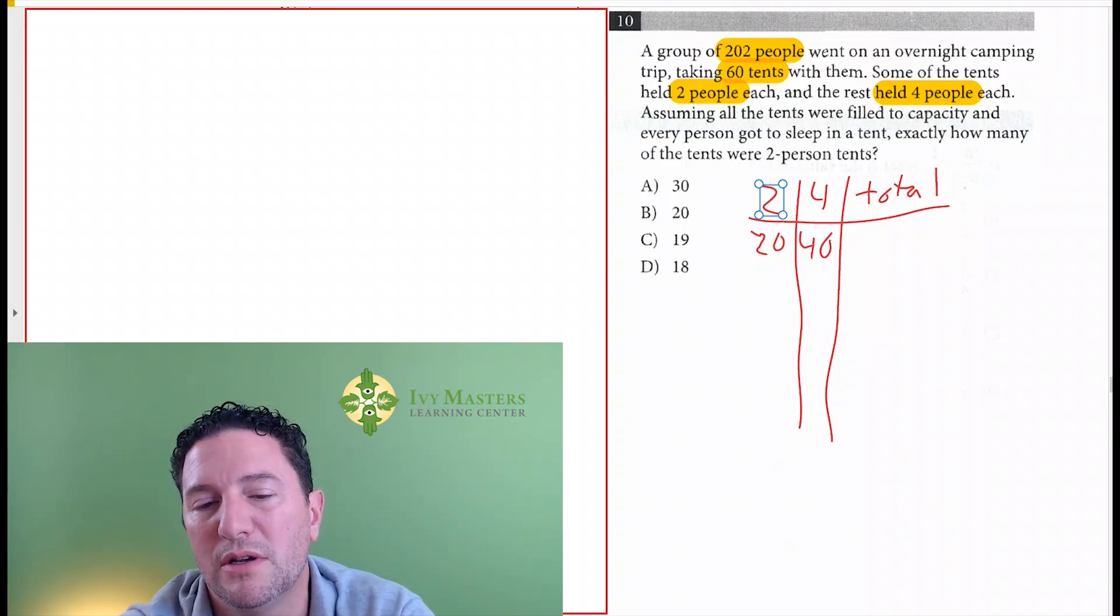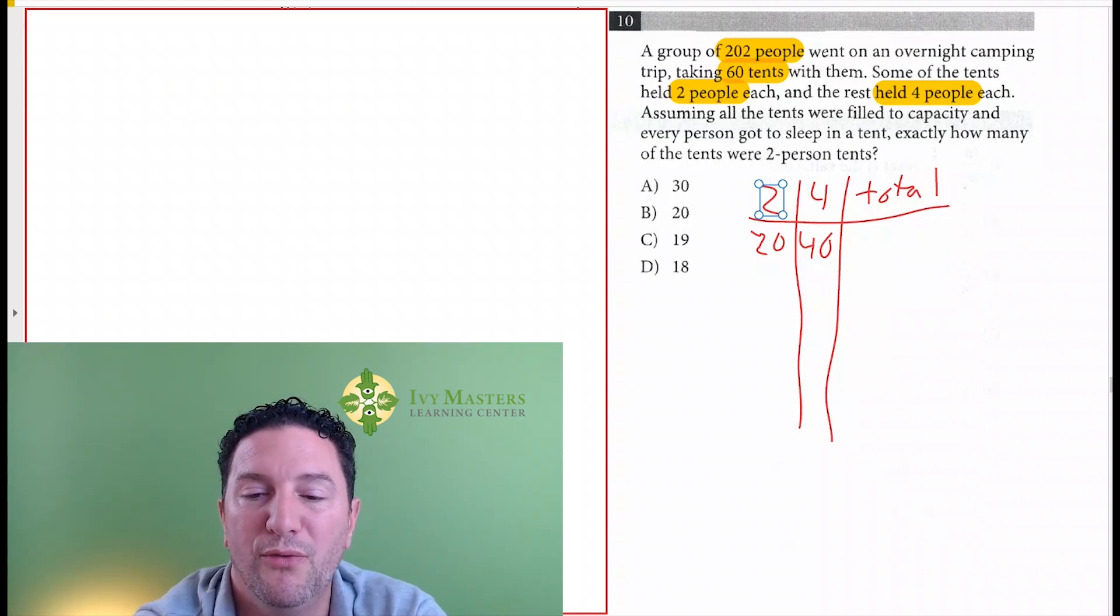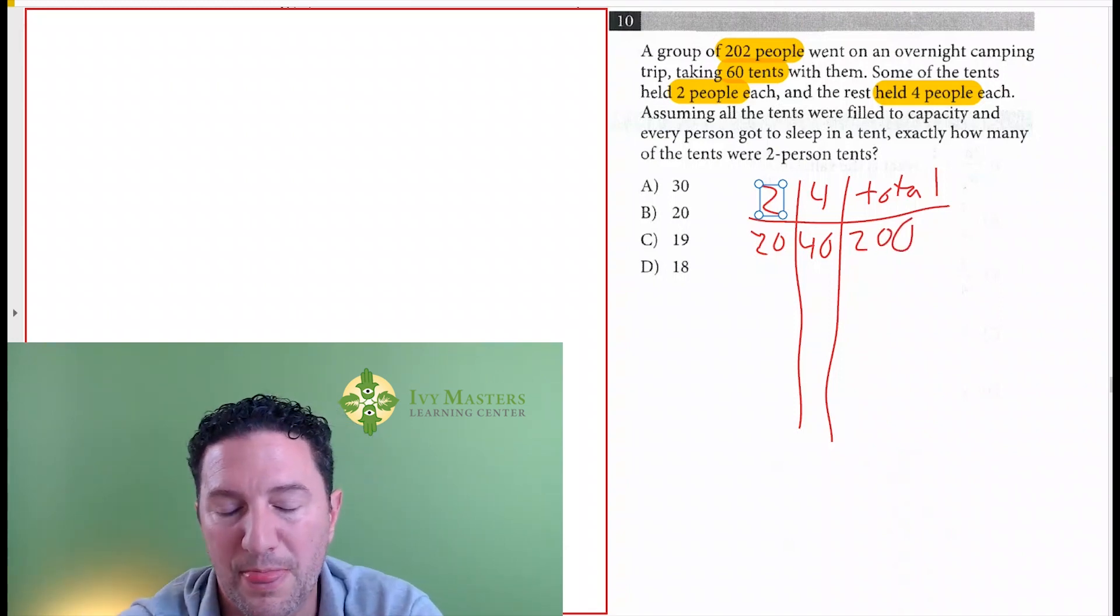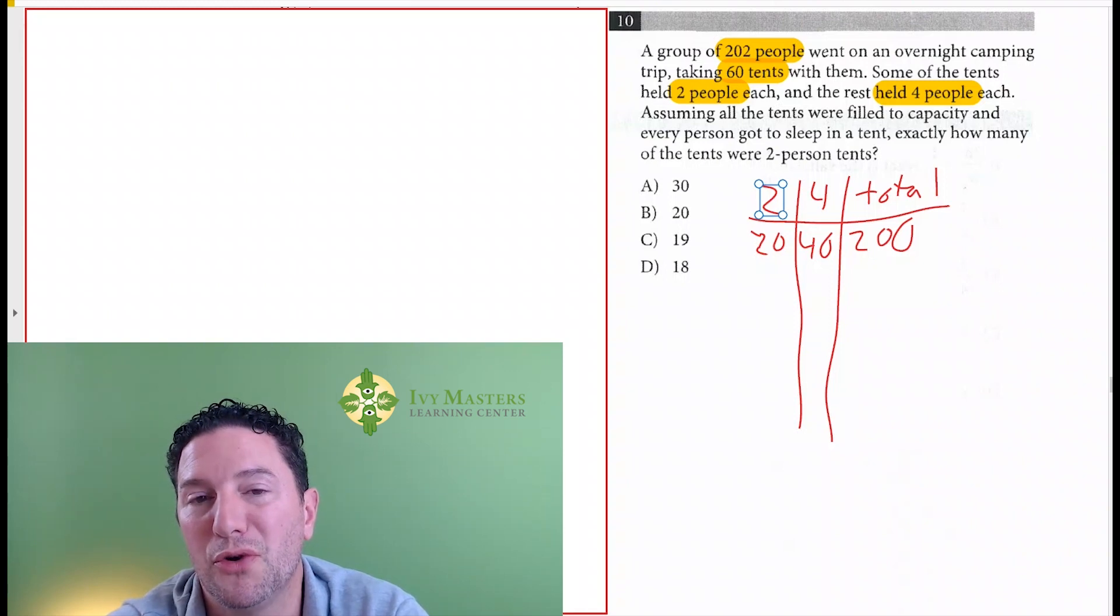20 times 2 is 40. 4 times 40 is 160. 160 plus 40 is 200 total people. And you could write that out, figure that out. But yes, it would be 200 total people.